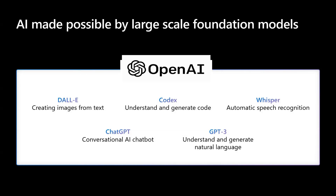DALL-E is a set of models that can generate or manipulate images from natural language. Codex is a set of models that can understand and generate code, including translating natural language to code. It is a descendant of GPT-3 that's been trained on both natural language and code.